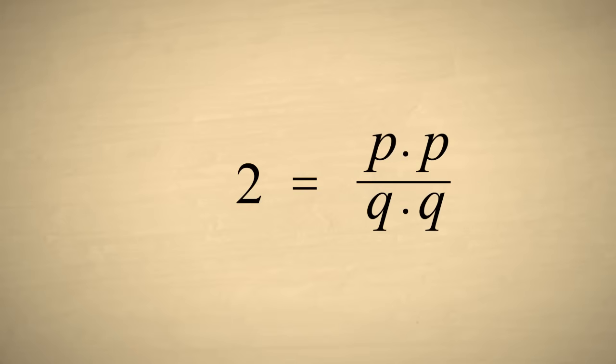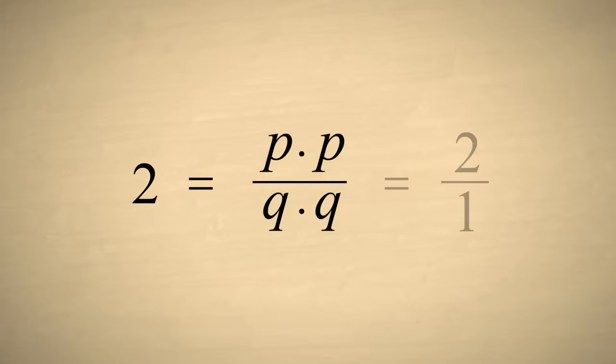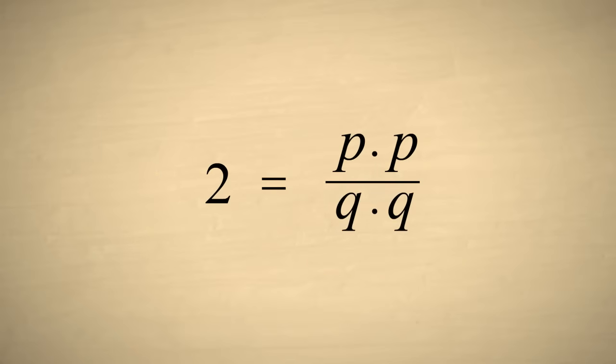For this fraction to be equal to two, we must somehow be able to reduce it to two over one. But we already saw that q was not one. So the only other way this fraction could be equal to two over one is to cancel out common factors in the numerator and the denominator.